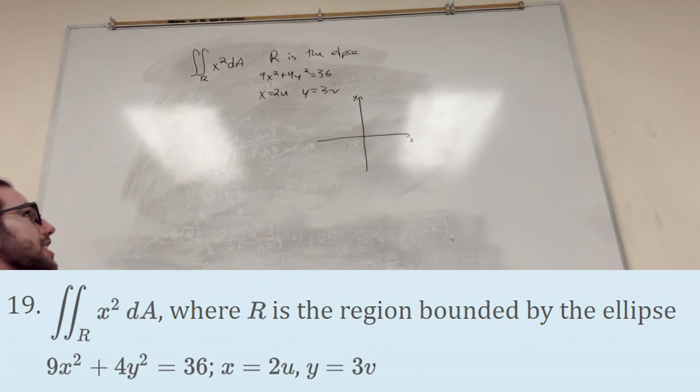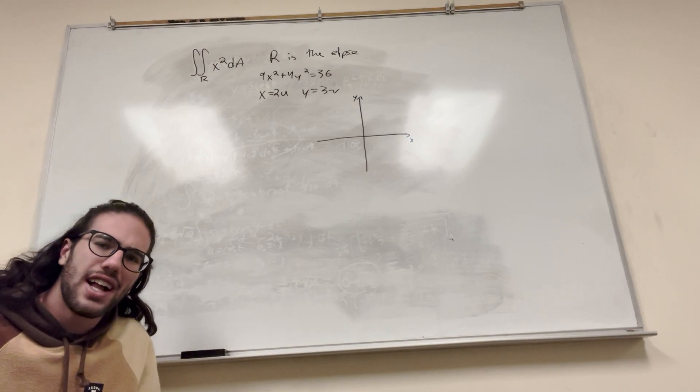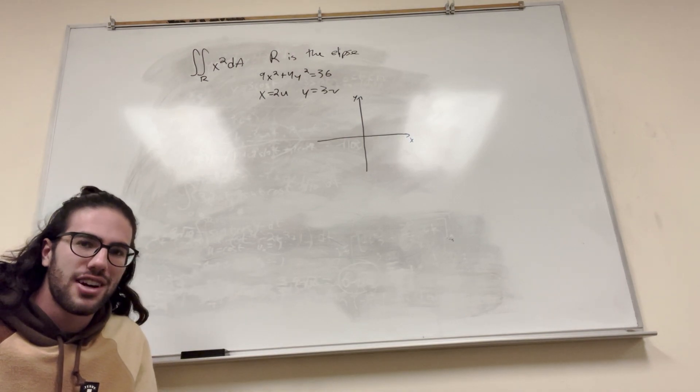It gives us this double integral over a region and says the region is the ellipse. And usually when you're given an ellipse, you're like, nah, I don't want to do that. Because ellipses are kind of weird, because they're going to be really hard to evaluate in normal mode, in Cartesian or whatever.